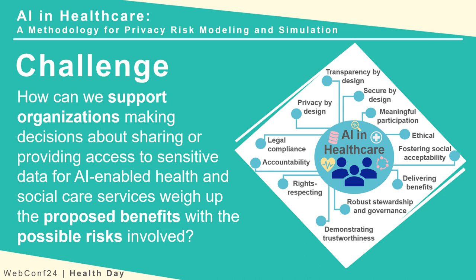Yet, we also know that growing application of AI in health and social care also presents risk to individuals, communities and groups of people and wider society. Against this backdrop, a key issue is how we can support organisations making decisions about sharing and providing access to sensitive data for AI-enabled health and social care services. In particular, how can privacy risk assessment methods and tools be used to support organisations in making these decisions consistently and transparently?